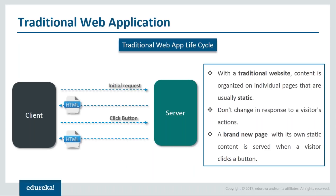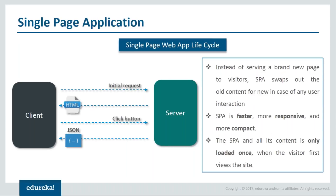Now let's look at a single-page application and how it works. Unlike traditional web apps, a SPA is made up of a single web page that is loaded once on your machine — that is, at the time you visit the website. Suppose you click on a button for opening the about page; this time, instead of requesting a new page from the server, only the data or content required for the about page will be retrieved. Because of this, SPAs are faster, much more responsive, and give you the feeling of using a native or mobile application.